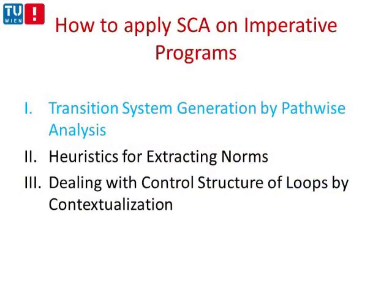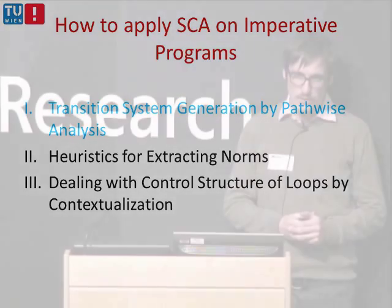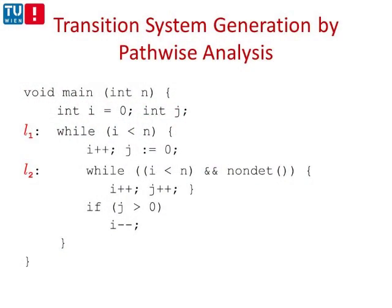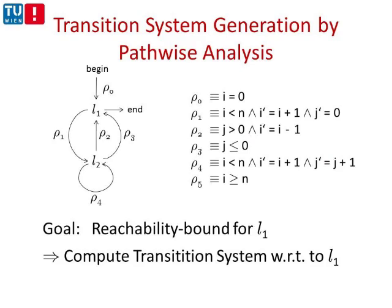Now I want to tell you how we actually perform the analysis on imperative programs. I will first explain how we derive a transition system for the program, then how we extract heuristics for the size change abstraction, and finally how we deal with control structure. Going back to the inner loop example: we want to compute the reachability bound for the outer loop — how often the header of the outer loop can be reached. We work with the control flow graph, where every edge is labeled by a transition relation.